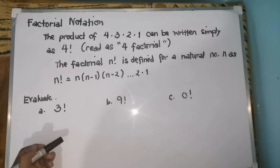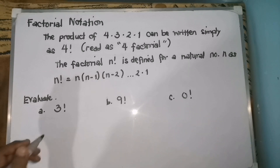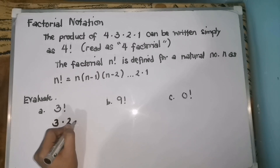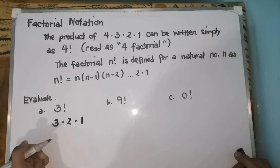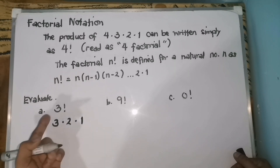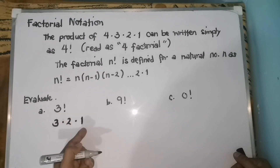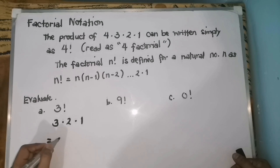Let's start with 3 factorial. To simplify 3 factorial, we can write it as 3 times 2 times 1. We just multiply 3 times 2 times 1. Therefore, 3 factorial is equal to 6.